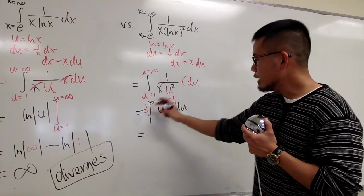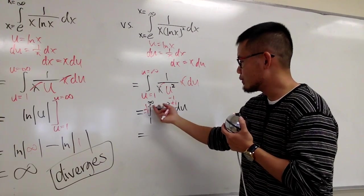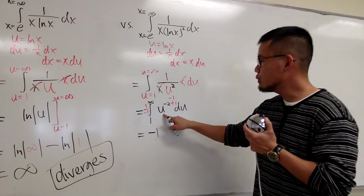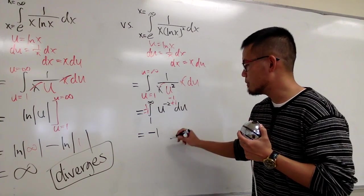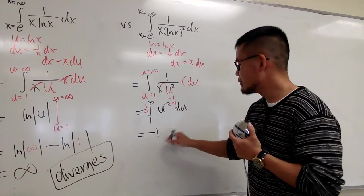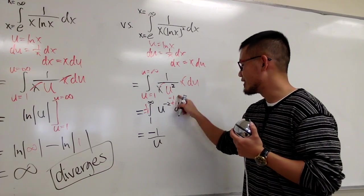So now the integral for this, it will be negative 1, which is right here. And we will have u to the negative 1 power. So let me just write it down as u to the negative 1. So let me put the u in the denominator like this, u to the negative 1 is just 1 over u.